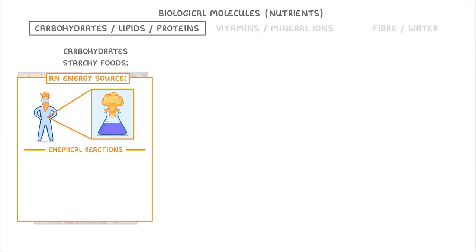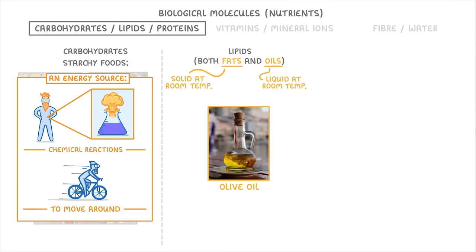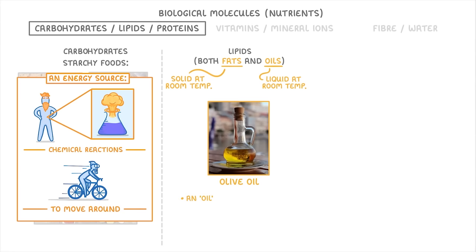that we need to carry out chemical reactions and move around. Next we have lipids, which is a confusing term because in everyday life we just refer to them as fats — but actually lipids refers to both fats and oils, with fats being lipids that are solid at room temperature and oils being lipids that are liquid at room temperature. For example, olive oil would be considered an oil rather than a fat because it's a liquid at room temperature, but you could also call it a lipid because all fats and oils count as lipids.